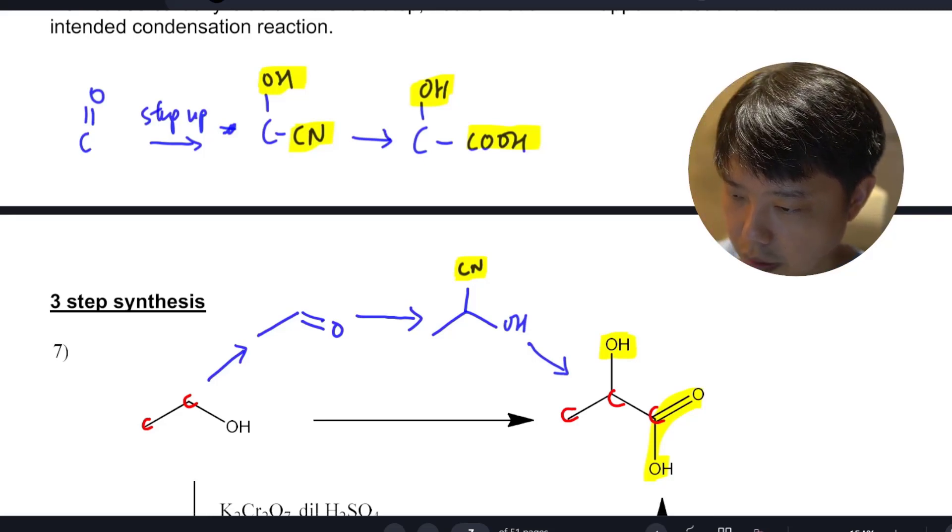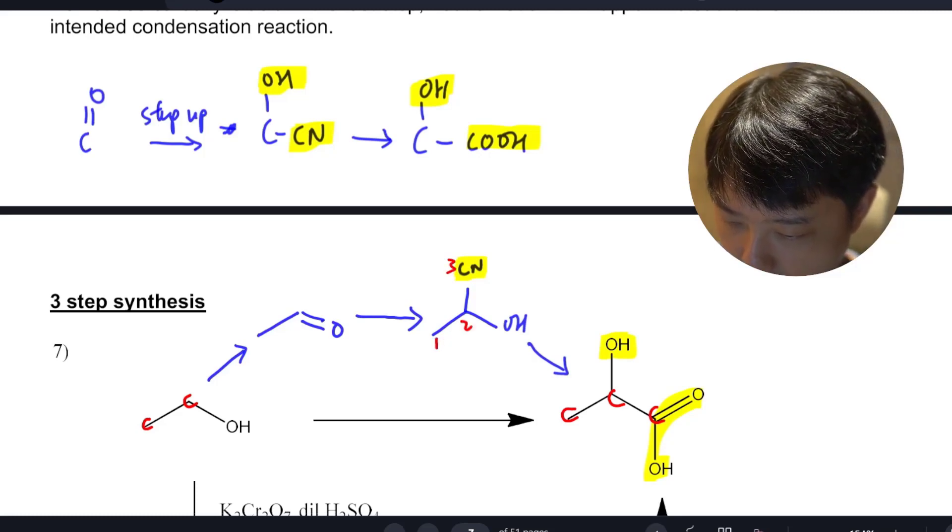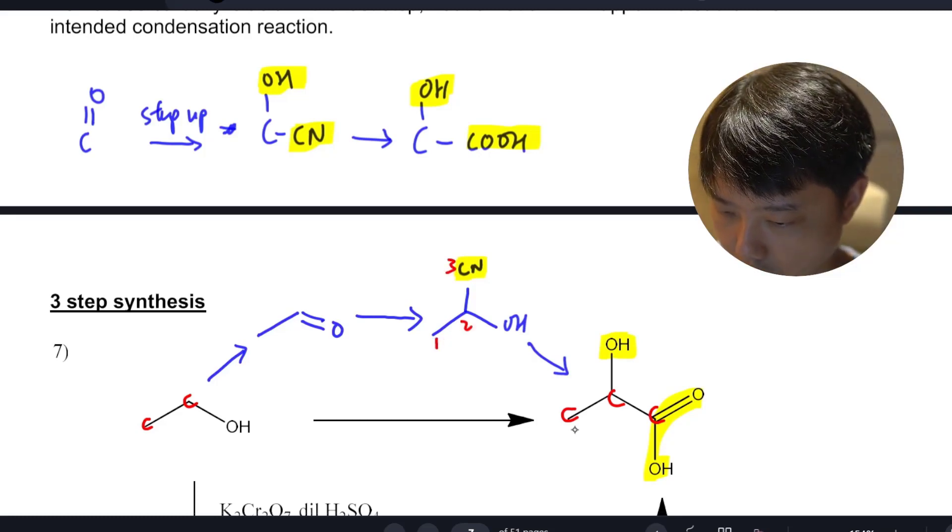So how many carbons do you have? You have one, two carboxylic acid. One, two, carboxylic.